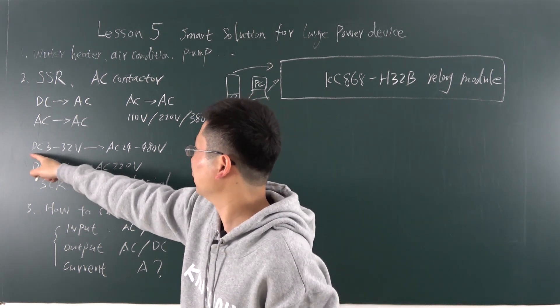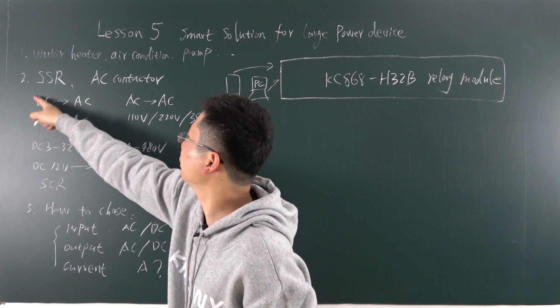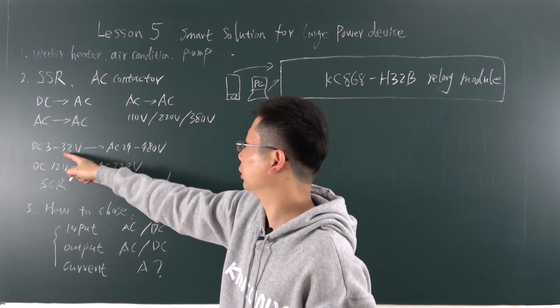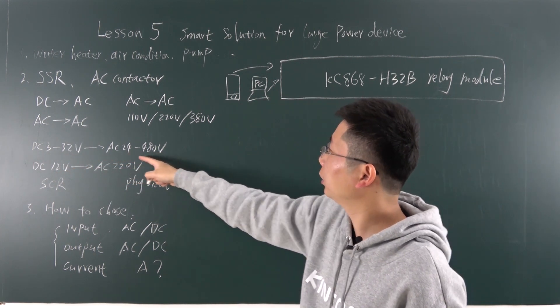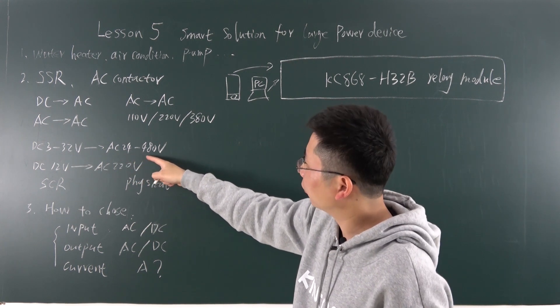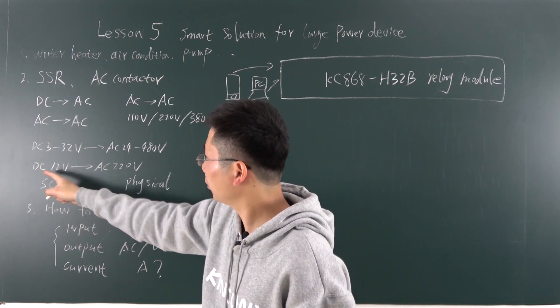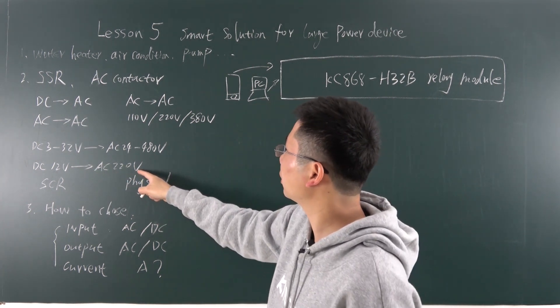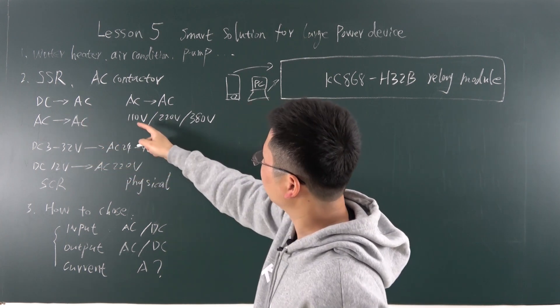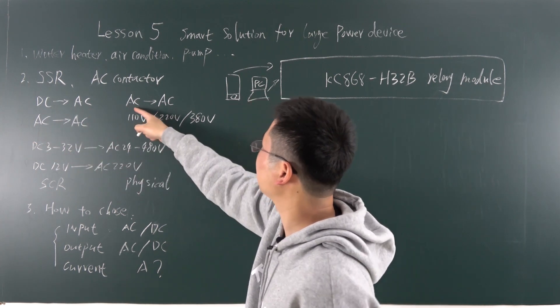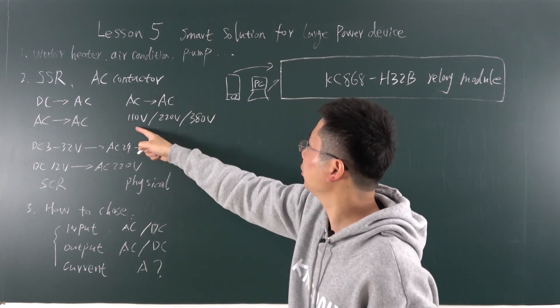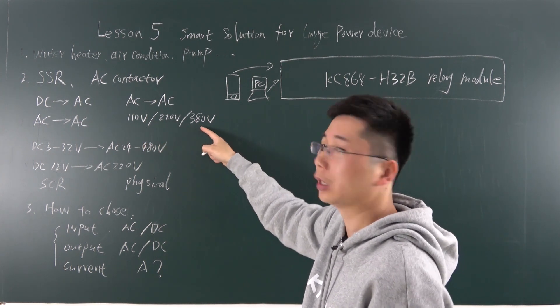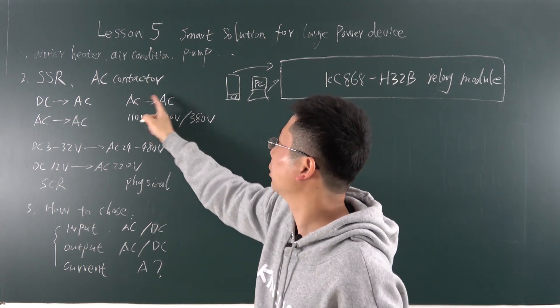And the typical one is, if you have input, for example, this type. If you have input from 3 to 32 volt, and it can control the AC output is 24 volt range to 480 volt. We can use input is 12 volt DC to control the AC 220 volt. This is for the DC to control the AC. But if you also have the AC to control the AC type, just like this AC contactor. So we can use the AC for 110, 220, or 380 volt to control the AC output.